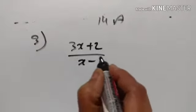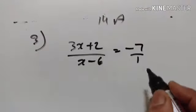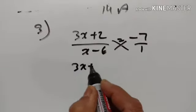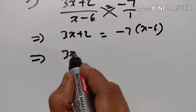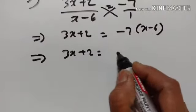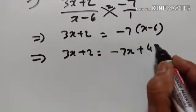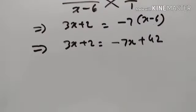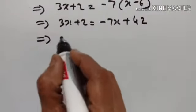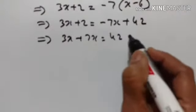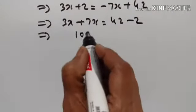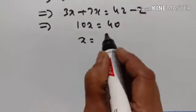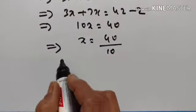3x plus 2 upon x minus 6 is equal to minus 7. On cross multiplication, we get 3x plus 2 into 1 is equal to minus 7 into x minus 6. 3x plus 2 is equal to minus 7x plus 42. Minus 7x is transposed to the left and becomes plus 7x. 3x plus 7x is equal to 42 minus 2. 10x is equal to 40. x is equal to 40 divided by 10. Therefore, x is equal to 4.